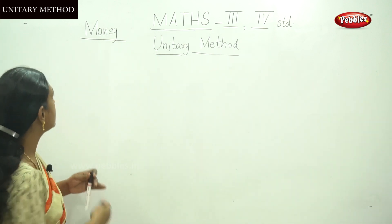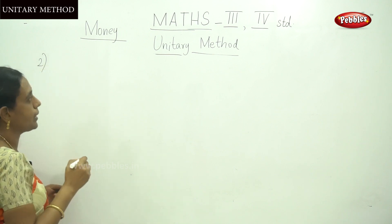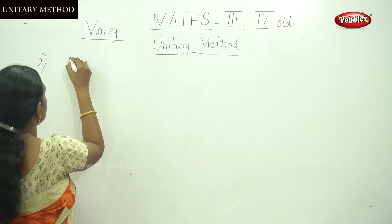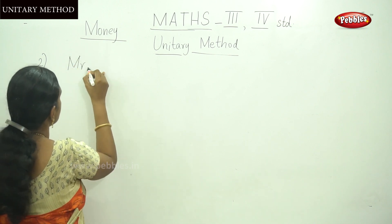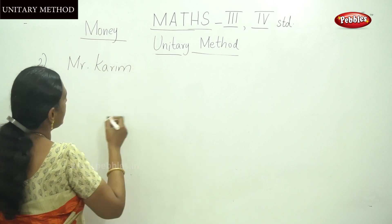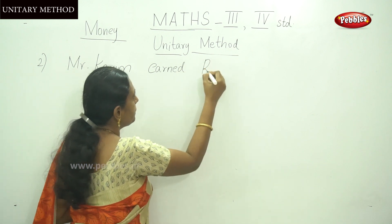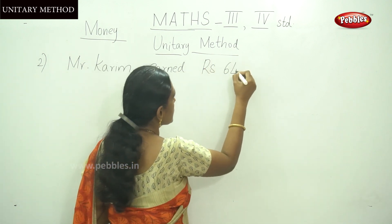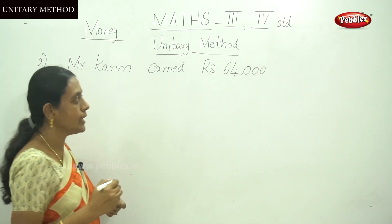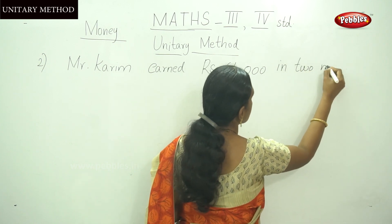Let me do the second example sum. Mr. Kareem earned rupees 64,000 in 2 months.